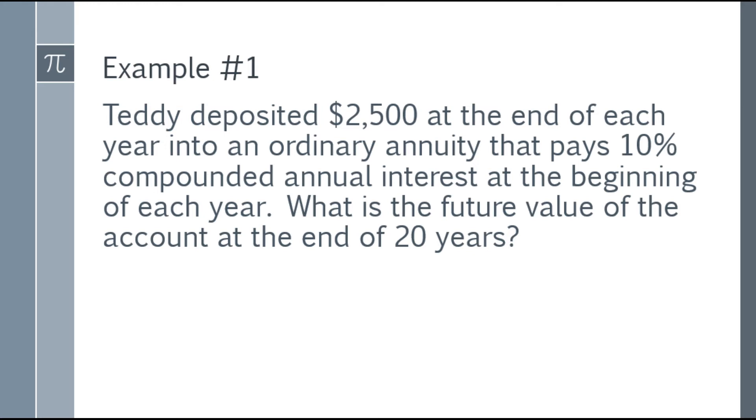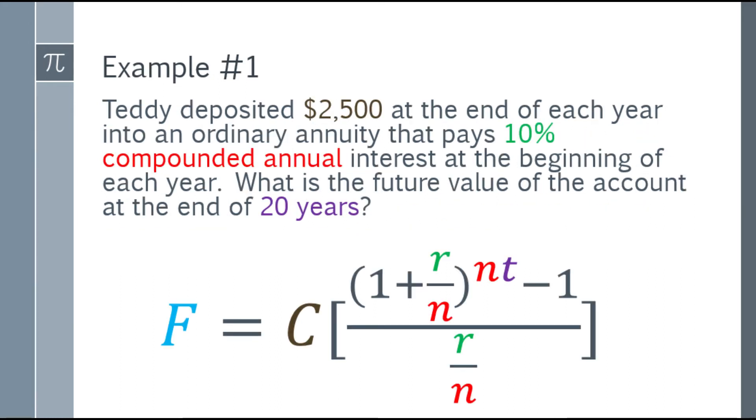Let's go to the first example. Teddy deposited $2,500 at the end of each year into an ordinary annuity that pays 10% annual interest at the beginning of each year. What is the future value of the account at the end of 20 years? First step, check if it's ordinary annuity - yes, end of each year payment with compounding annually. Next, write the formula.